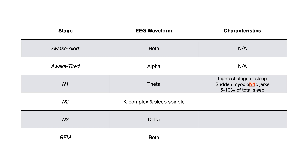For N2, we already talked about K complexes and sleep spindles. The other key thing to know is that this is where bruxism - a fancy term for teeth grinding - occurs. N2 makes up 50% of total sleep, so most of the sleep throughout the night is N2. That is very high yield to know.